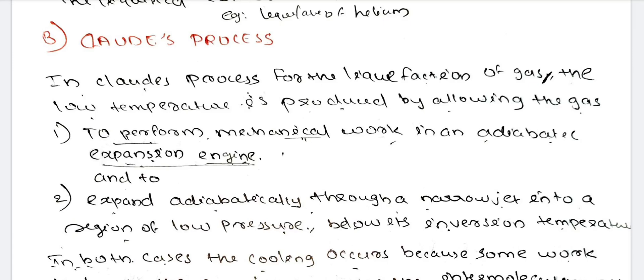The first method is to perform mechanical work in an adiabatic expansion engine. This is the heat constant condition. We are going to use a piston to perform mechanical work. Under mechanical work in an adiabatic condition, we are going to get the gas and get the temperature reduced.